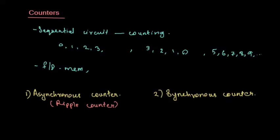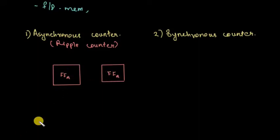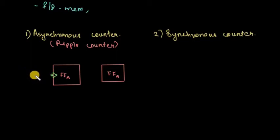Suppose there are two flip-flops: flip-flop A and flip-flop B. Flip-flop A can be a JK, T, or D type. This flip-flop receives a clock pulse, and it is negative edge triggered. The output of this flip-flop is QA.